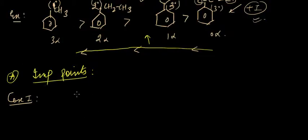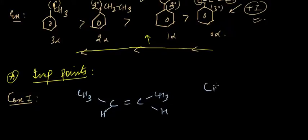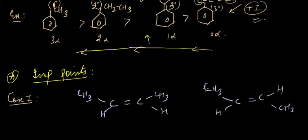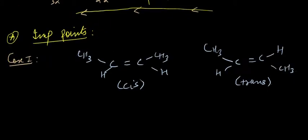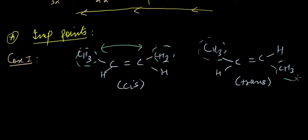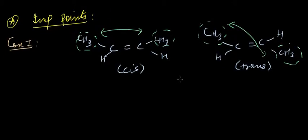In Case 1, we need to compare the stability of two compounds: a cis compound and a trans compound. The two bulky groups are on the same side in the cis compound and on diametrically opposite sides in the trans compound. To compare stability, we first check: no resonating structure is present in either compound, and both have the same number of alpha hydrogens.